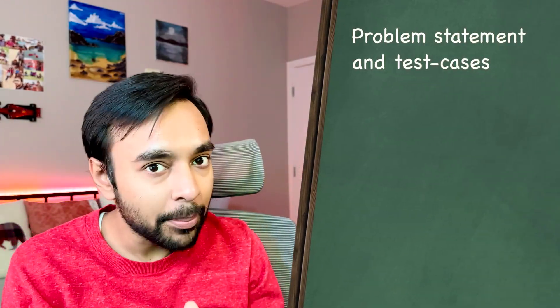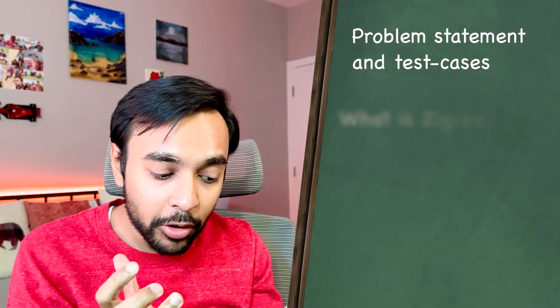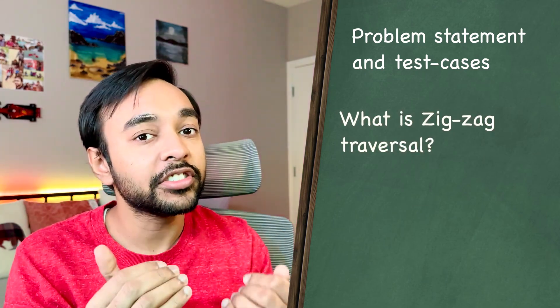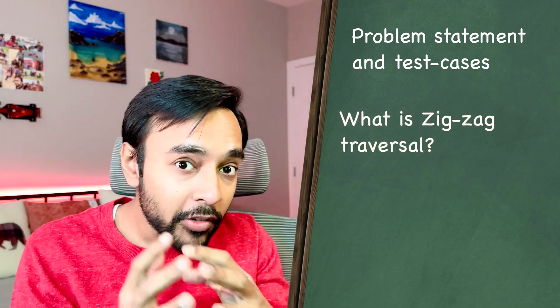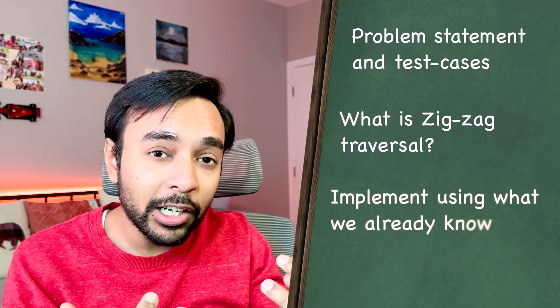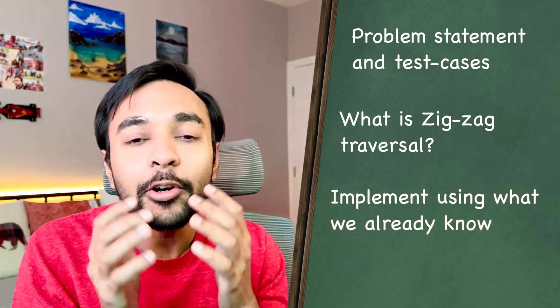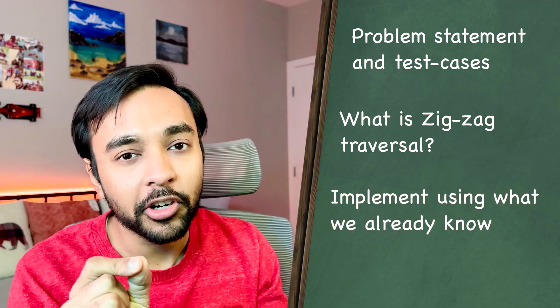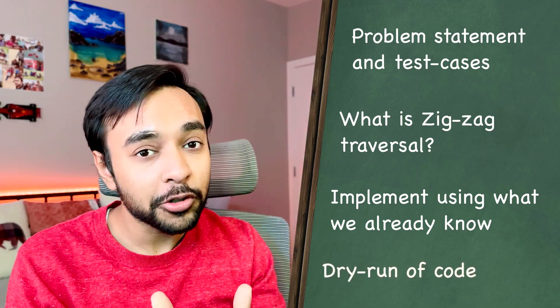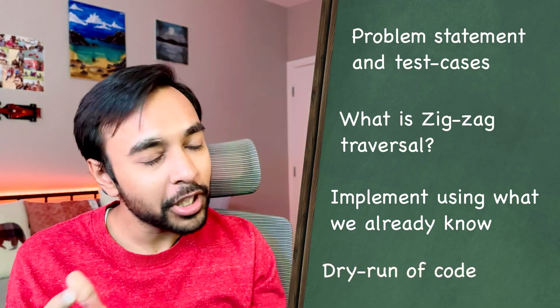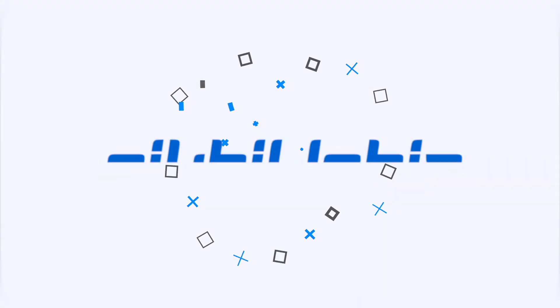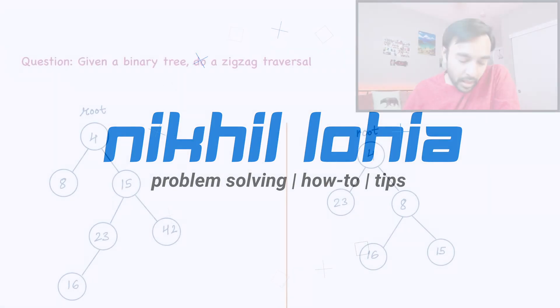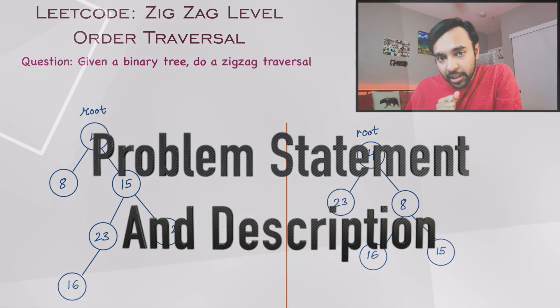First I will explain the problem statement and we will look at some sample test cases. Next we're going to see what a zigzag traversal actually means, and then we will try to implement this solution using a method that we already know — it's just a very small trick. After that we will also do a dry run of the code.